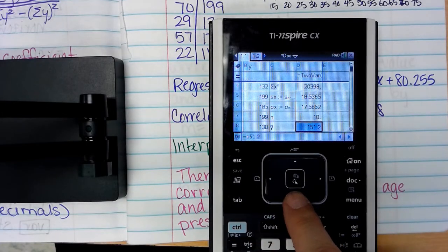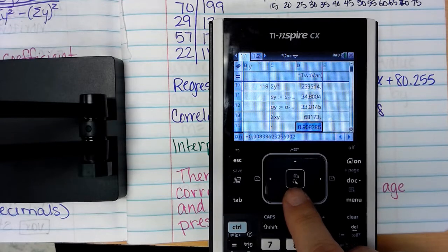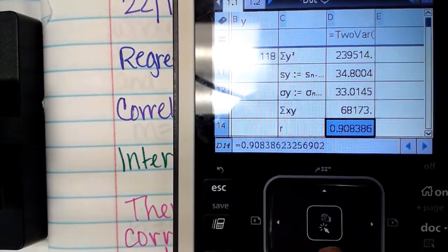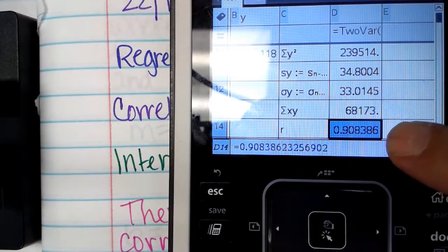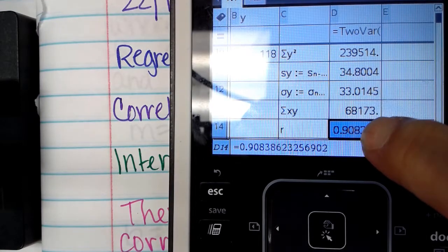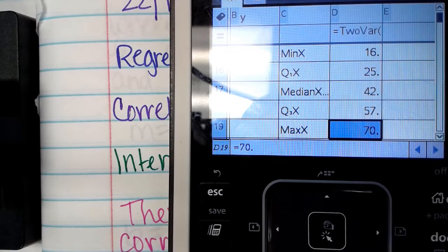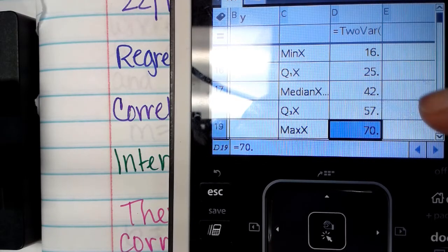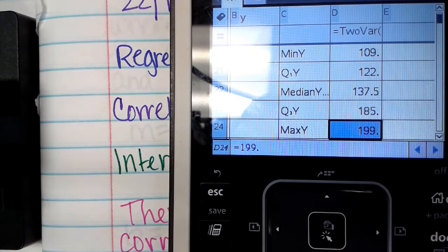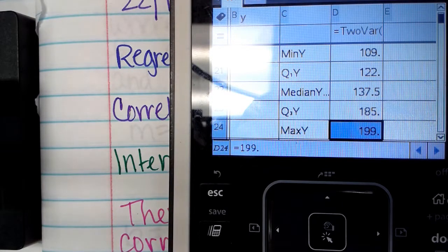Now this gives us all the information about the x's and the y's. So you see the mean of the x, the standard deviation of the x, and how many pairs there were. At the end you see the mean of the y's, the standard deviation of the y's, and then you'll see r. R is your correlation coefficient. So we see 0.908386, and we only need three decimal places, so we're going to do 0.908. You also will see the min and the max and all of the big five on the x's - min, first quartile, median, third quartile, max - and then you'll see the same thing for your y's.